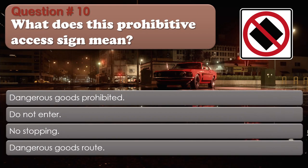Question number 10. What does this prohibitive access sign mean? Dangerous goods prohibited. Do not enter. No stopping. Dangerous goods route. The correct answer is: Dangerous goods prohibited.